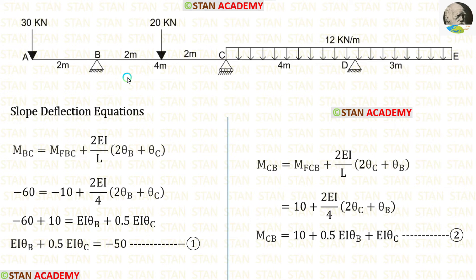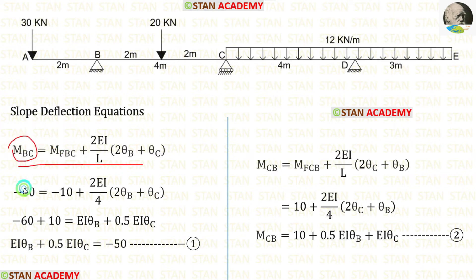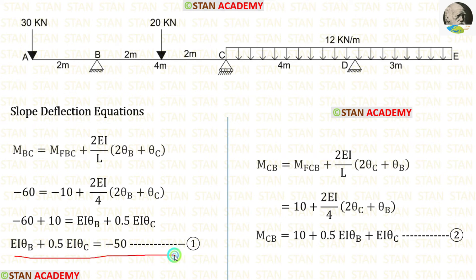Now let us make the slope deflection equations. First, for span BC, we apply the fixed end moments and the span length of 4 meters. Using this equation and knowing MBC equals −60 kN·m, we take −10 to the left side so it becomes positive, and we form the first equilibrium equation.